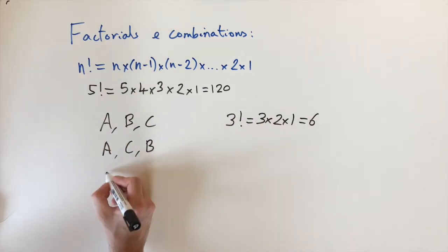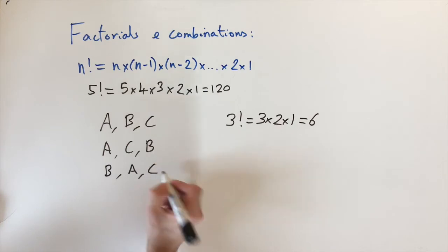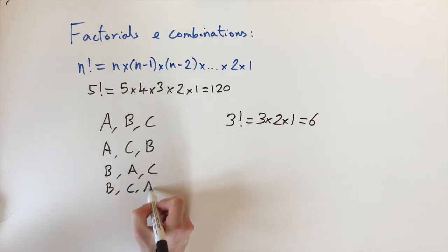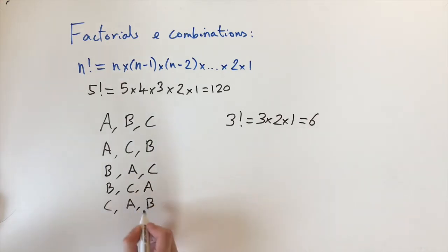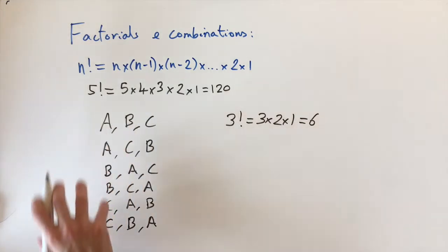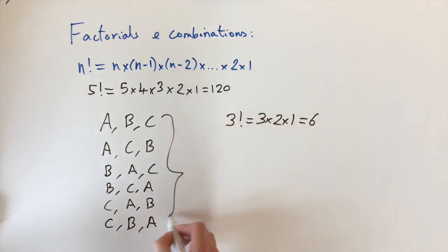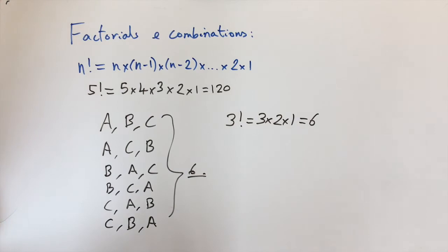We've exhausted options starting with a. Starting with b instead: b, a, c and b, c, a. Starting with c: c, a, b and c, b, a. These are all the possible combinations — and as expected we have exactly six, which confirms that n factorial gives the number of ways of ordering n objects.